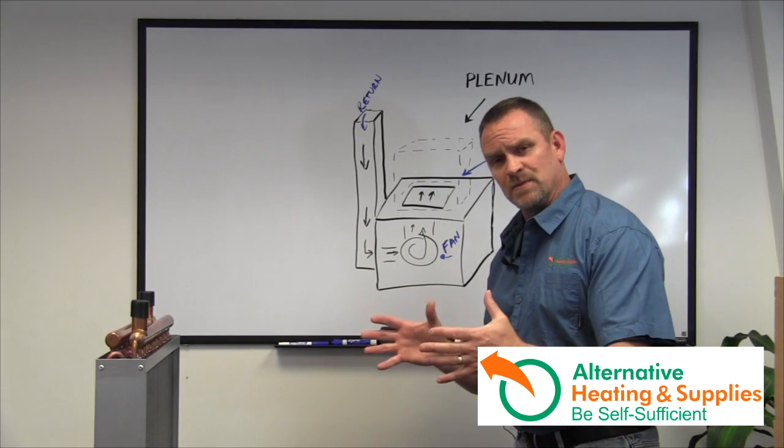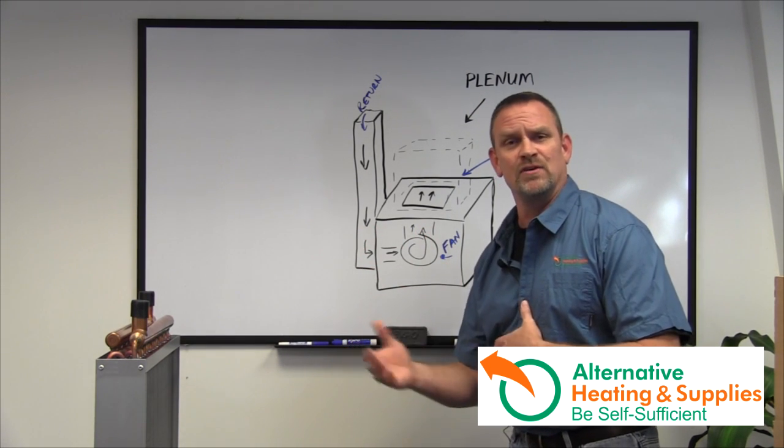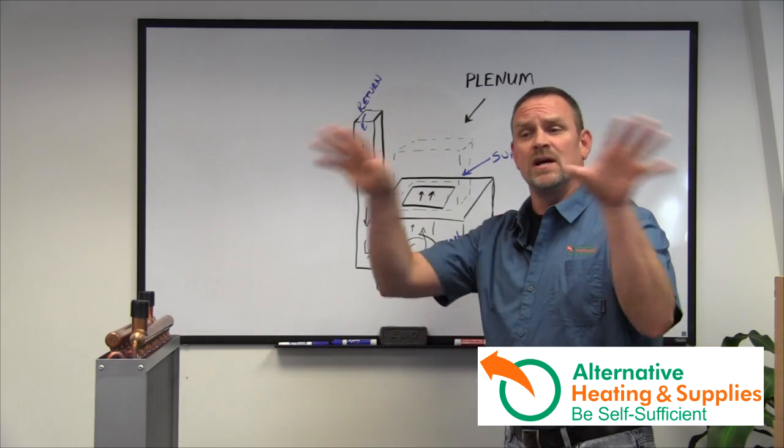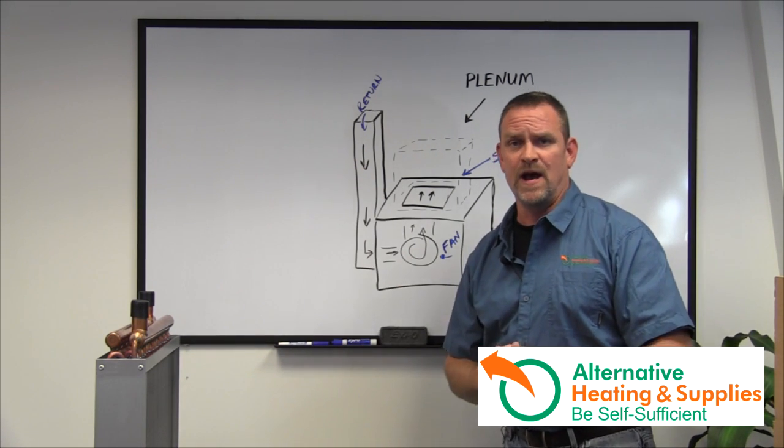So if you have a tighter plenum or smaller plenum you're going to get less air travel. So they try to put the bigger plenum in to get better air travel through the house and less resistance to distribute the air evenly throughout the house.